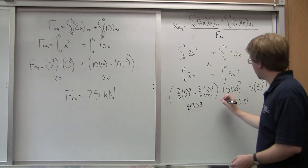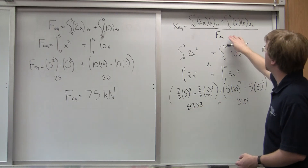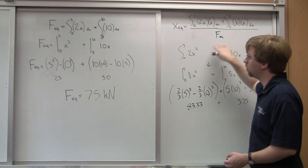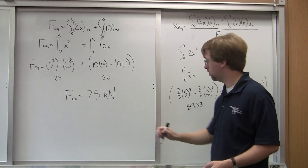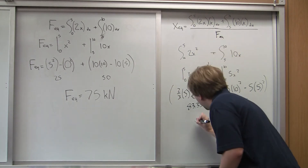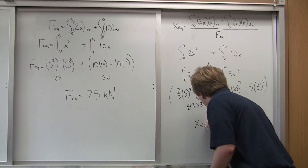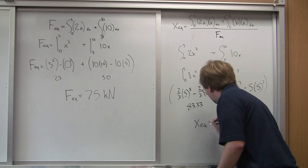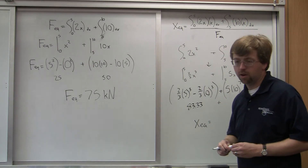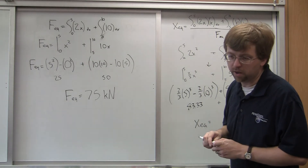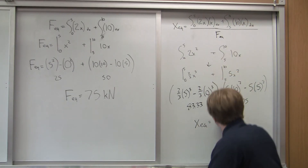Taking the sum of these two numbers and dividing by F_eq of seventy-five kilonewtons, I find x_eq — the position of my equivalent point load — is six point one one meters.